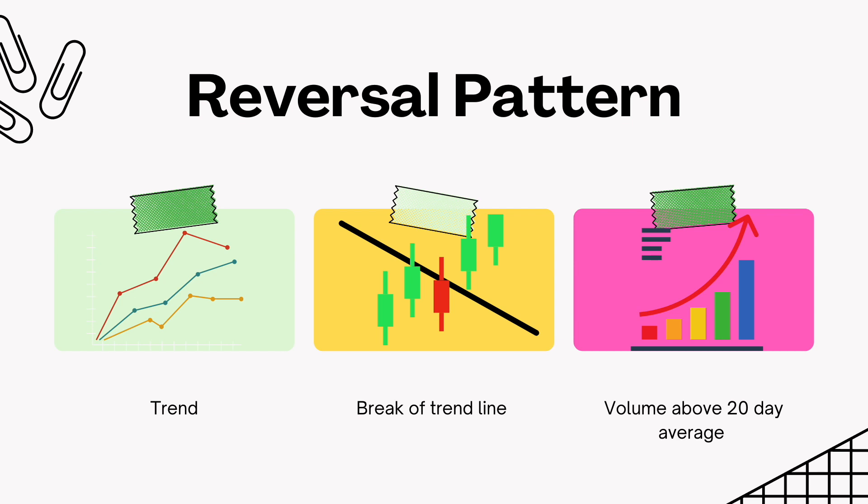The second requirement for a reversal pattern to materialize is a break above a trendline resistance for a bullish breakout, or a break below the trendline support for a bearish breakout. This signals a shift in the demand and supply balance of the market.